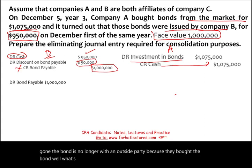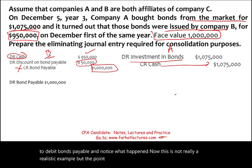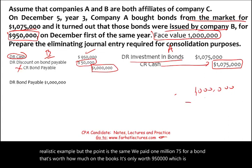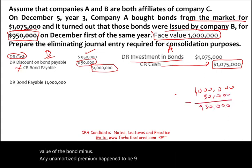We paid $1,075,000 for a bond that's worth how much on the books? It's worth $950,000, which is the face value minus any unamortized discount — in this case $950,000. On the CPA exam, they might tell you the bond was purchased after two years, in which case you'd reduce the discount by the amortized amount. For illustration, assume the discount remaining was $45,000 after amortizing $5,000, making the bond's book value $955,000.